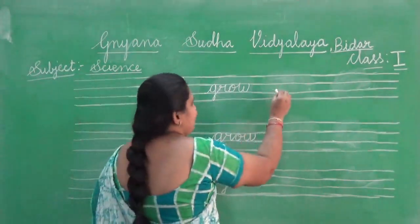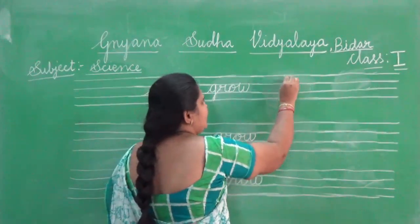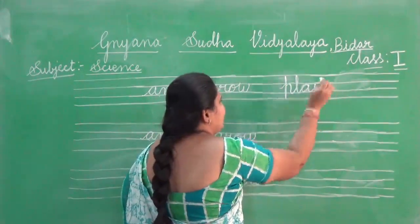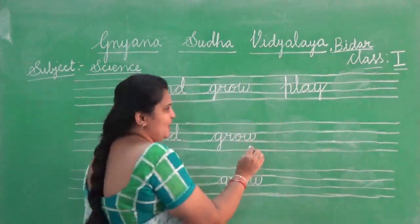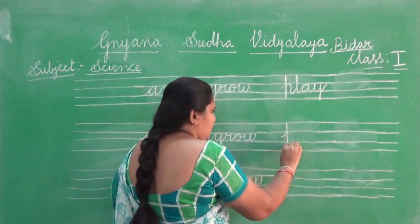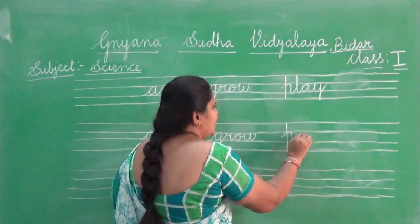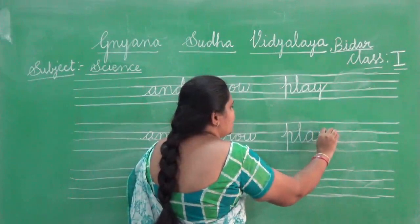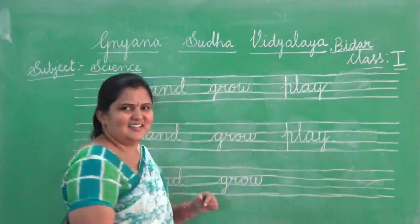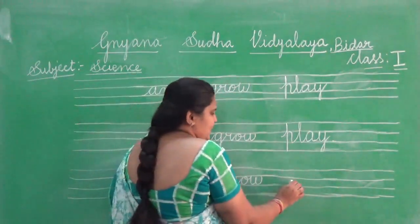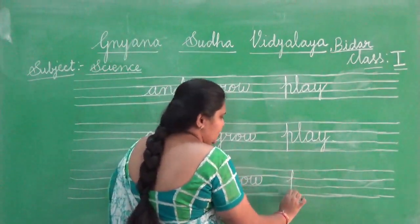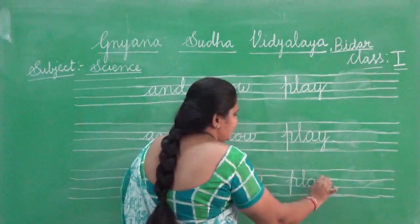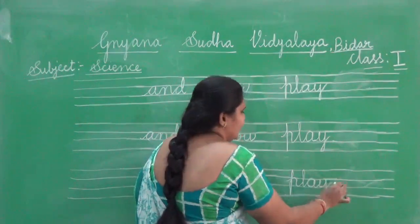One more four letter word: play. P — you are going to touch all the four lines. P, L, A, and Y. Play. Look at the board once again. P — touch all the four lines. L — touch only upper line and between two lines. A — only between two lines. And Y — you are going to touch only the lower line. This is play.